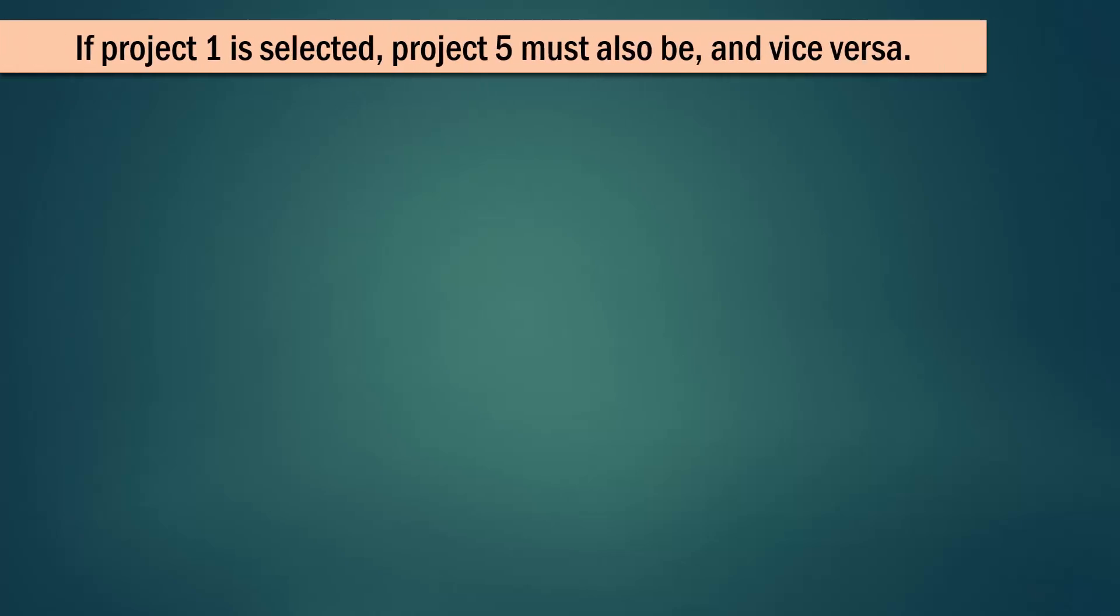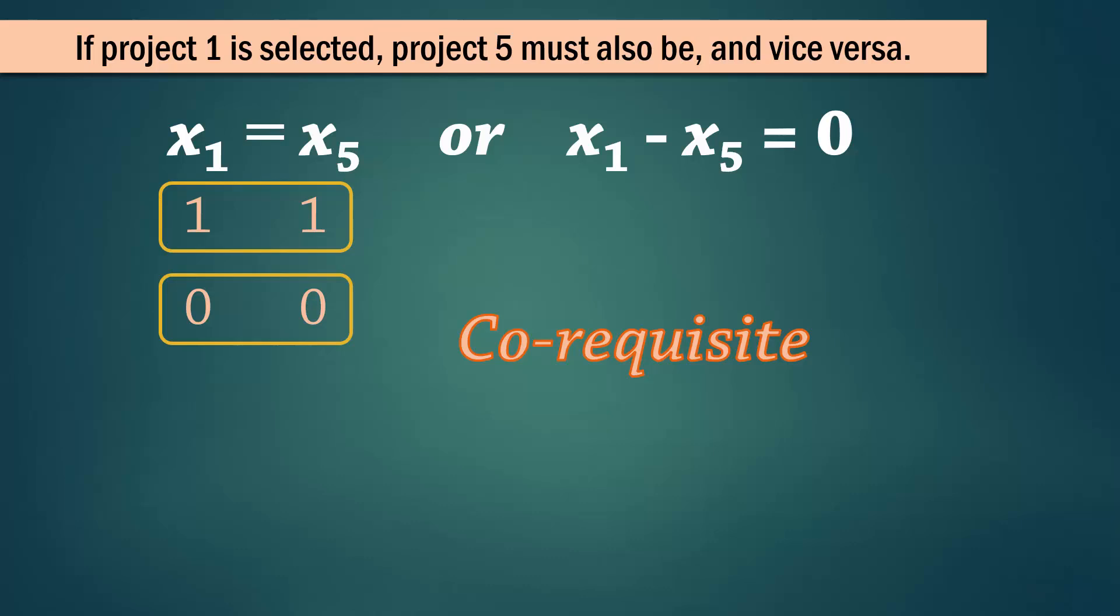Next, if project 1 is selected, project 5 must also be, and vice versa. In this case, we write x1 equals x5, or x1 minus x5 equals 0. That is, if we are selecting any of the two, we must also select the other. This is called a corequisite constraint. In essence, 1 and 5 are equivalent. That is, we either select both, or select neither of them. We can't select one without the other.